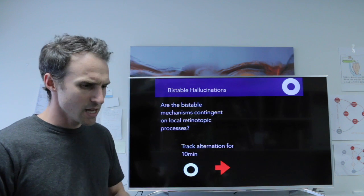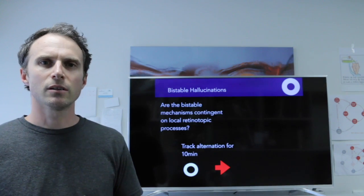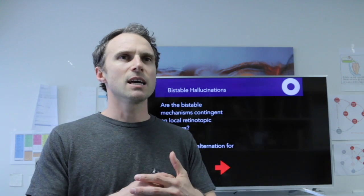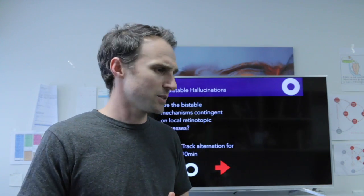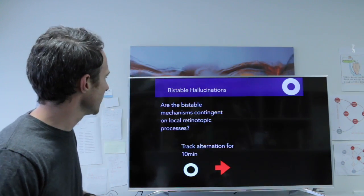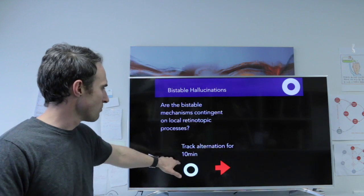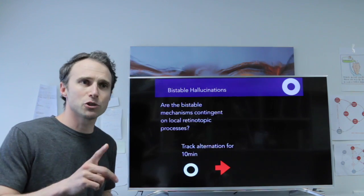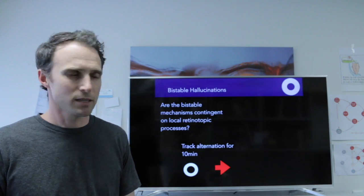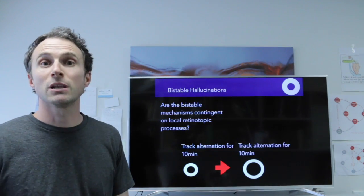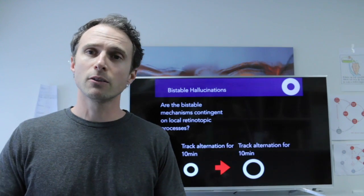Another thing we want to look at is adaptation. Adaptation is a phenomenon that's general across all neural systems and across all perceptual systems. So what are we going to do here? We're going to show people a small ring and we're going to have people tracking those alternations for a few minutes. Then we straight away show them a large ring and they keep on tracking those alternations.